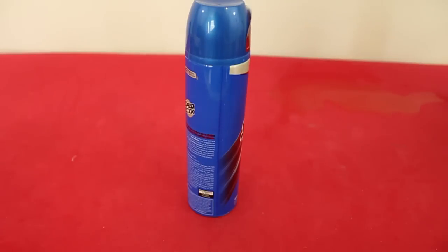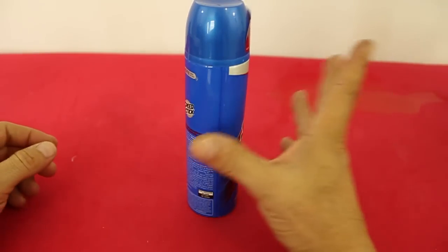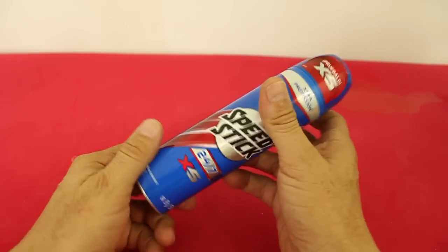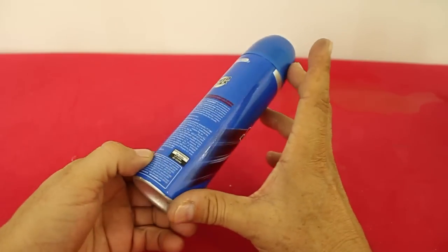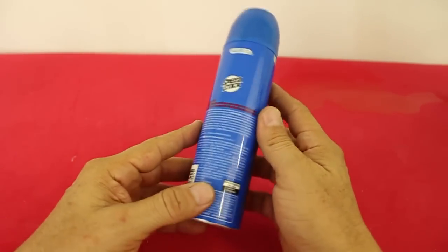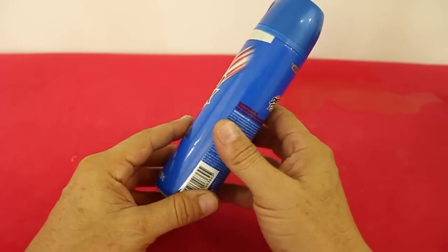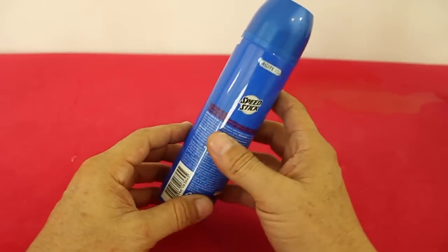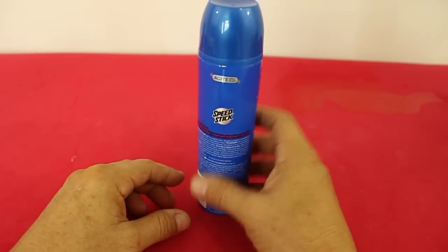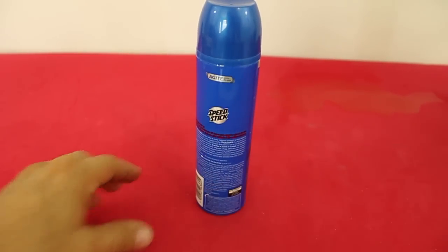I will start by making the displacer cylinder and for this I will use a deodorant can, standard size. Before working with it you need to remove all the contents in order to have as little pressure as possible.